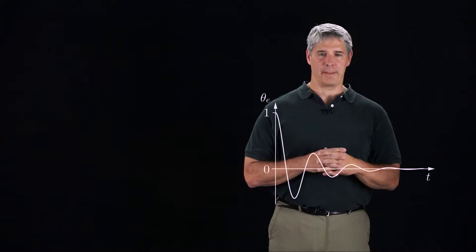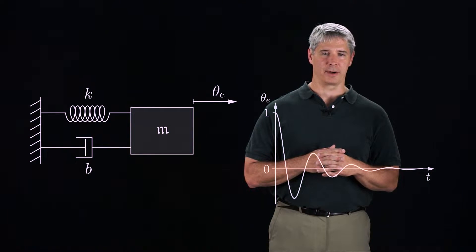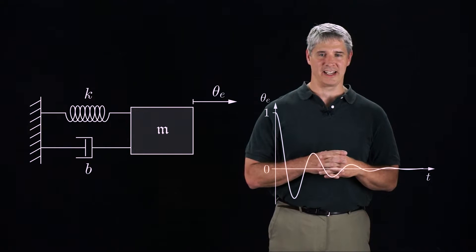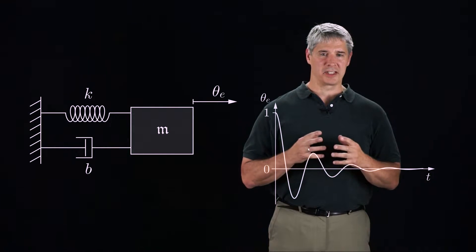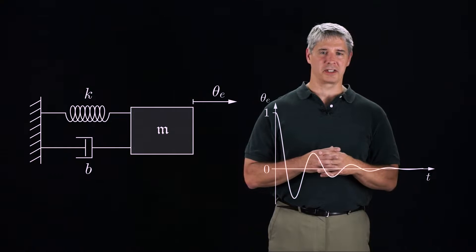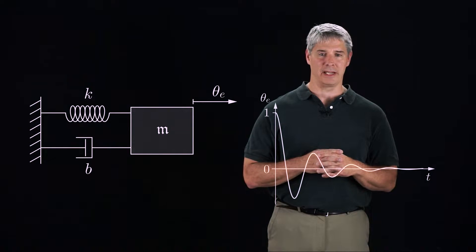This plot also happens to be the position response of a mass-spring damper, where the position of the mass is theta E. As we will see soon, designing a controller is much like choosing the spring constant K and the damping constant B.